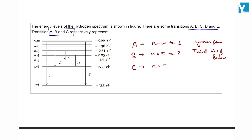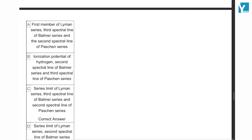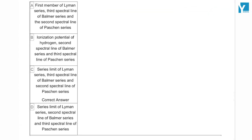Which is from n equals 5 to 3. This is the second spectral line of Paschen series and also relates to the first member of the Lyman series and third line of the Balmer.